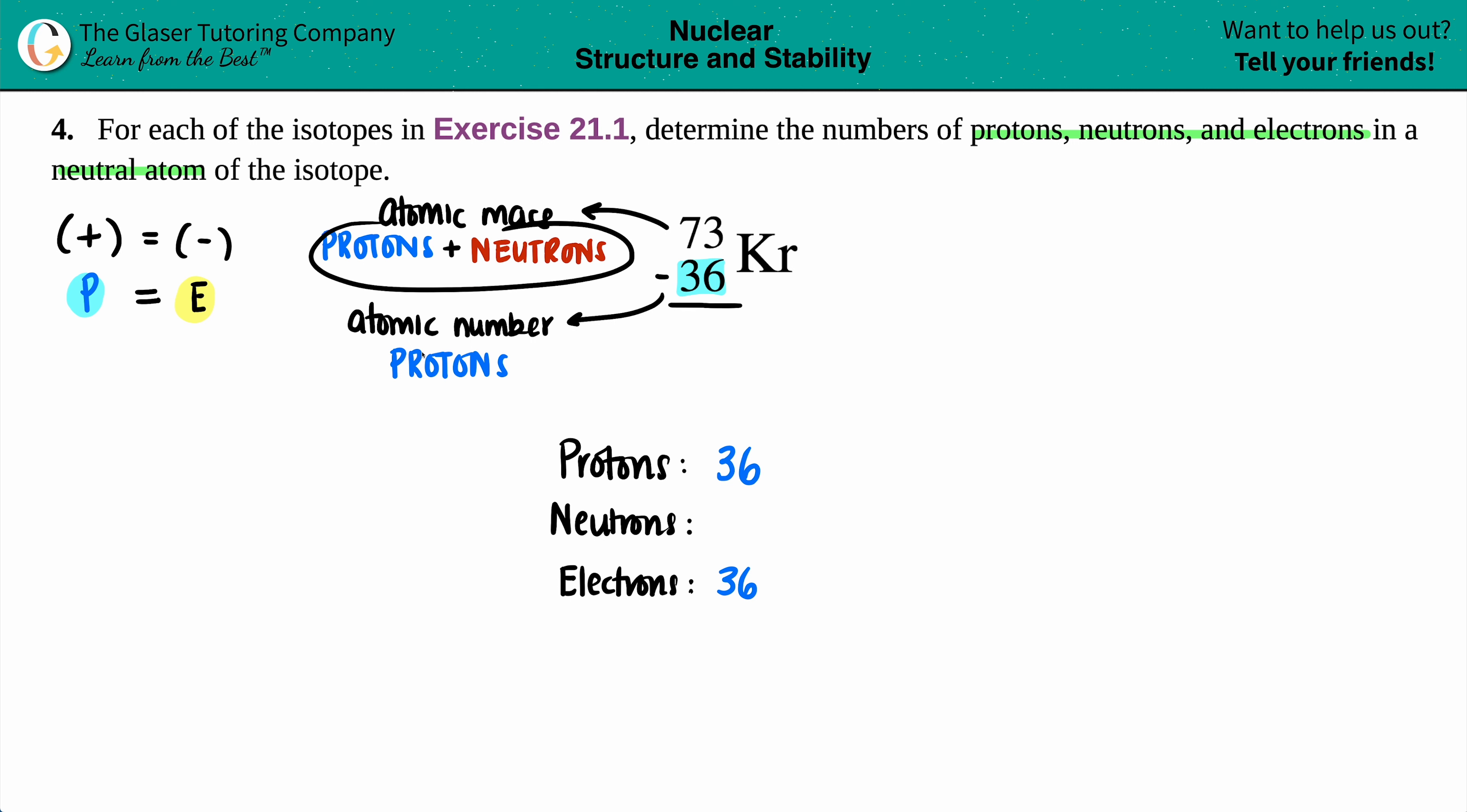Yeah, we would have to subtract them, because if you have protons and neutrons and you subtract the protons, they go bye-bye, and now all you're left with is just the neutrons. So whether you do 73 minus 36, that's going to give you the number of neutrons.